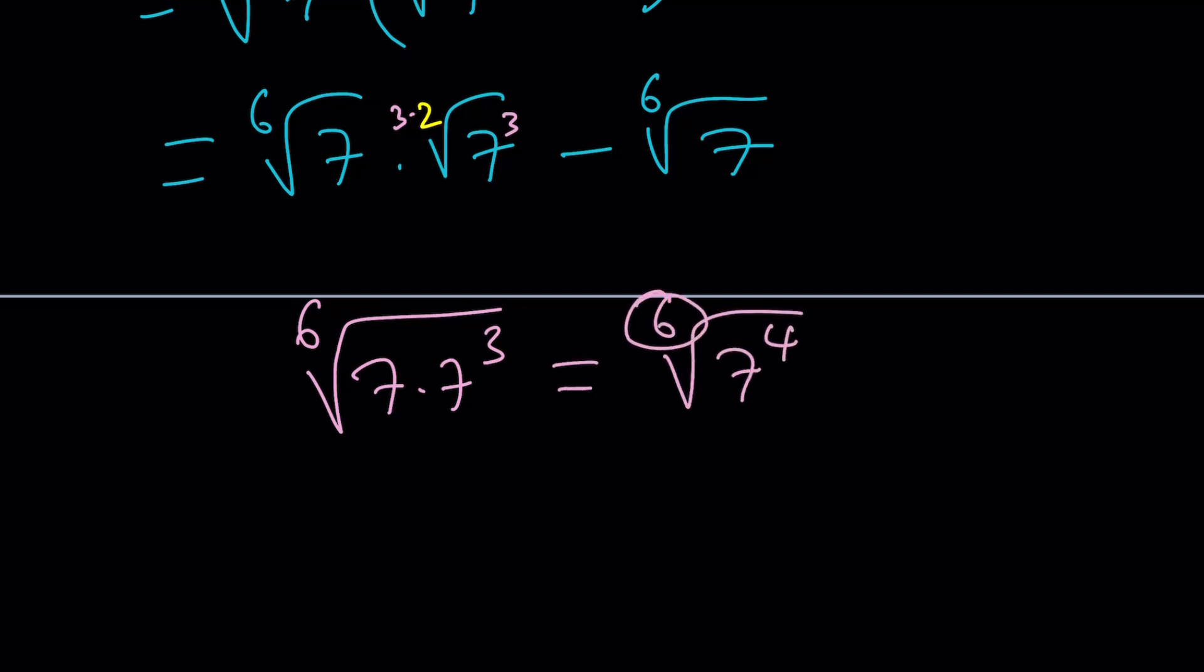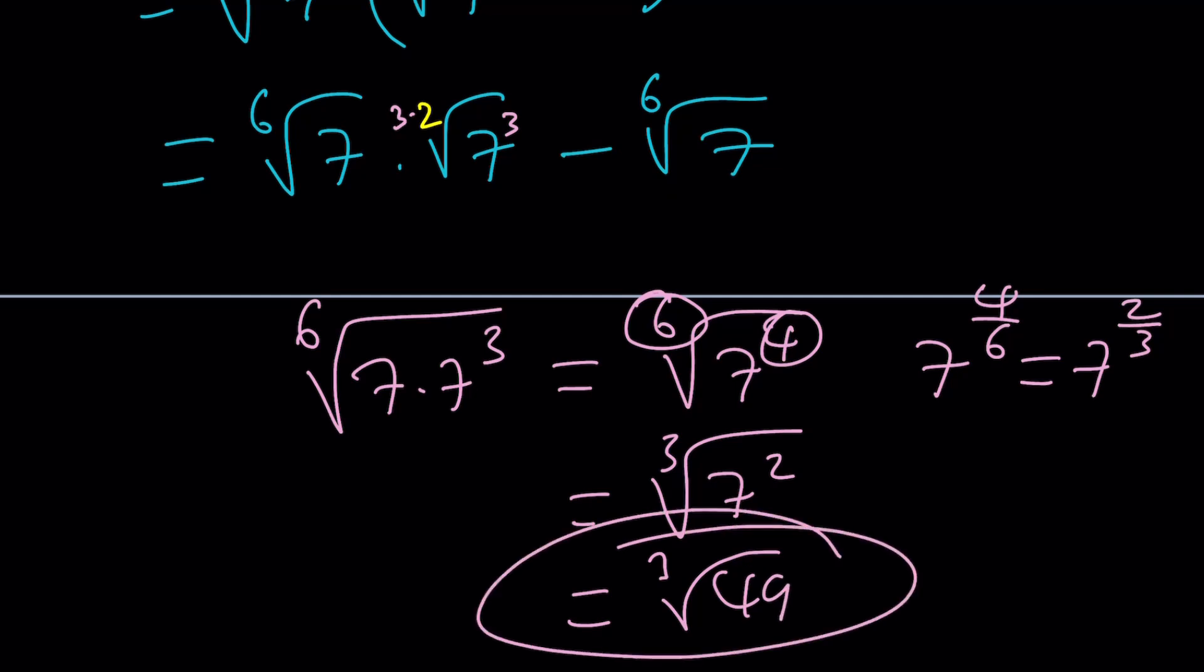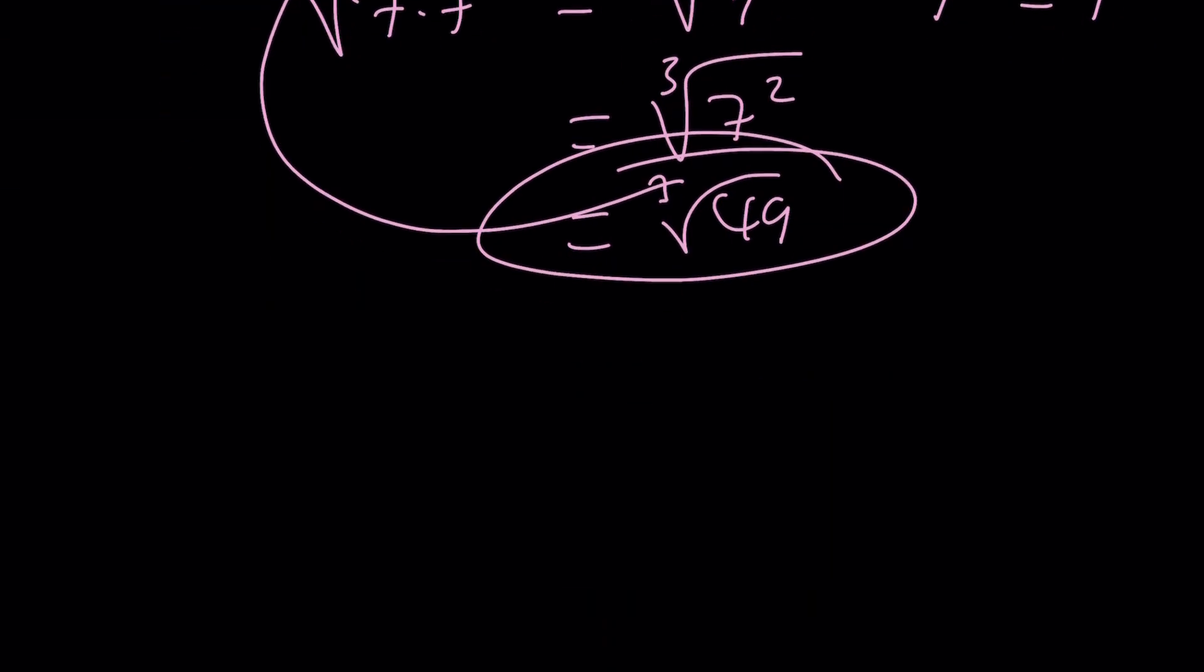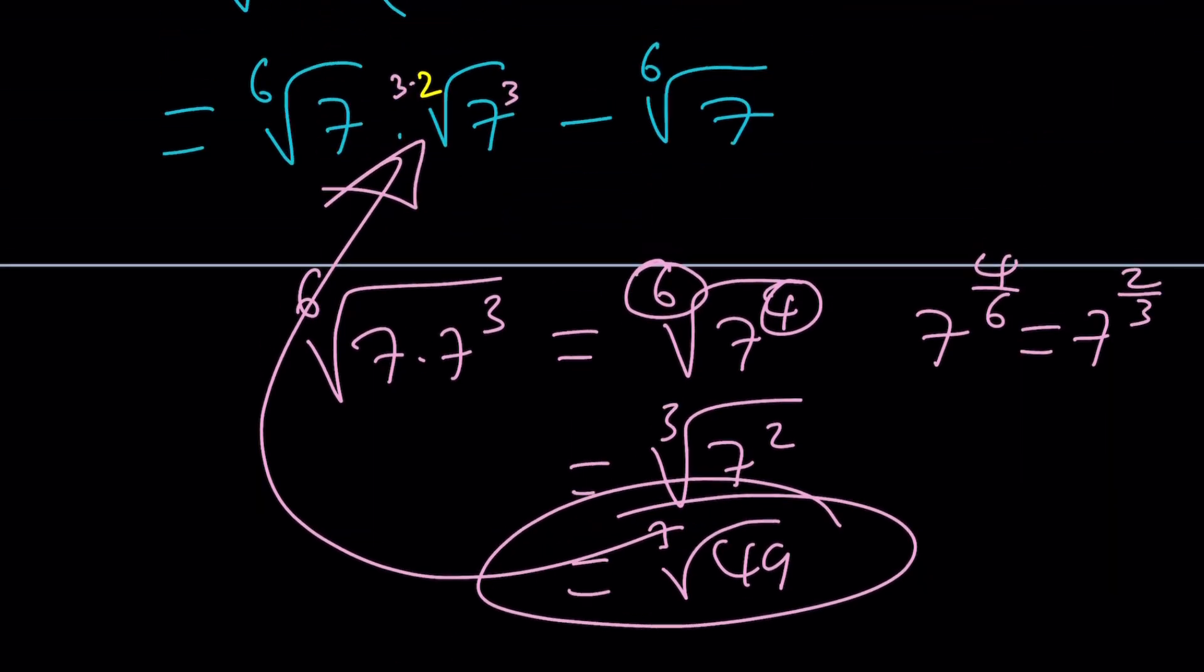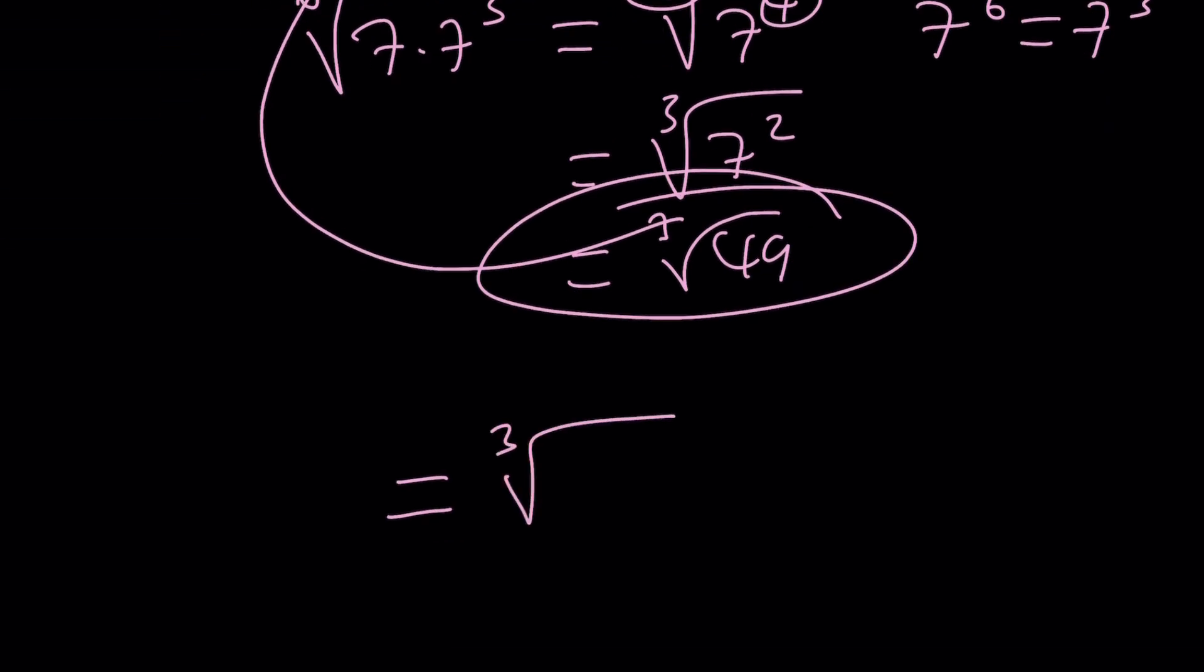And now we can go ahead and reduce because this is basically 7 to the power 4 over 6, which can be written as 7 to the power 2 thirds, which can be written as the cube root of 7 squared, which can be written as cube root of 49. I hope that wasn't too much real quick. And now we're going to go ahead and back substitute that. And the result, ta-da! It's going to be the cube root of 49 minus the 6th root of 7.